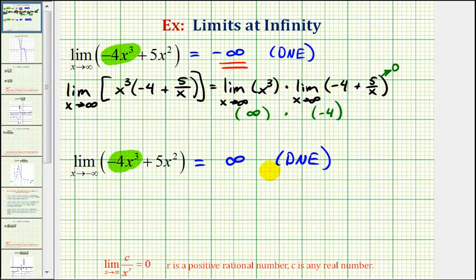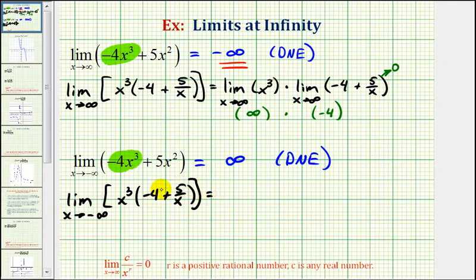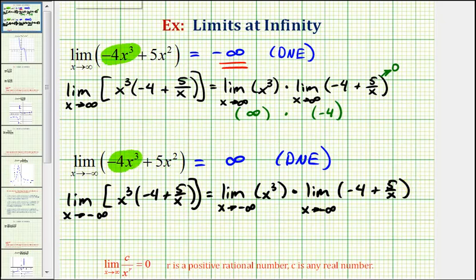Again, if this isn't convincing enough, we can go ahead and factor out x cubed as we did in the first example. So we'll factor out x cubed from both terms, leaving us with negative four plus five divided by x. Now we'll write this as our product of two limits. It should be easier to see that the limit as x approaches negative infinity of x cubed — because we're raising a negative number to an odd power — would approach negative infinity. The second limit: the negative four is not affected by x, and five divided by x would still approach zero, so the second limit would equal negative four. In this form, we can tell that a very large negative number times another negative number would be a very large positive number, confirming our limit is positive infinity as x approaches negative infinity.